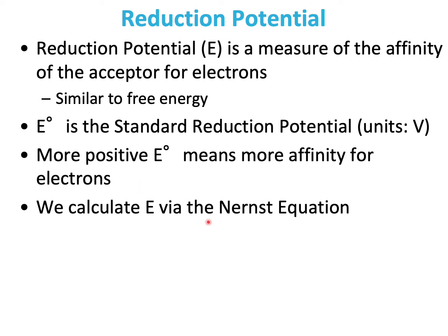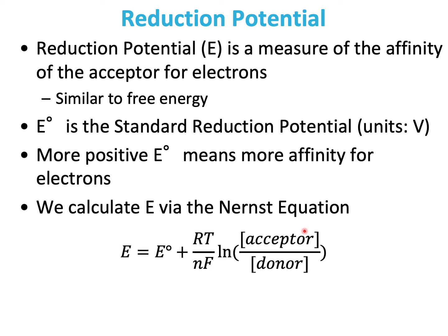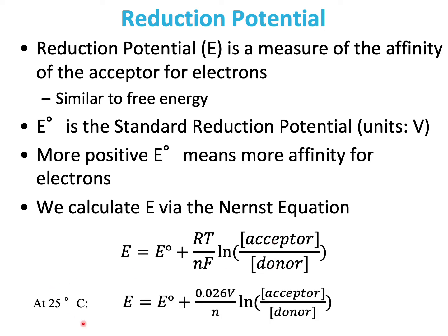We calculate E via the Nernst equation, which is E equals E0 plus RT divided by NF, times Ln of the concentration of acceptor divided by the concentration of donor. At 25 degrees Celsius, E equals E0 plus 0.026 volts divided by N, times Ln of concentration of acceptor divided by concentration of donor.